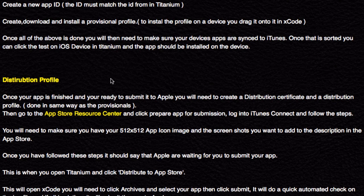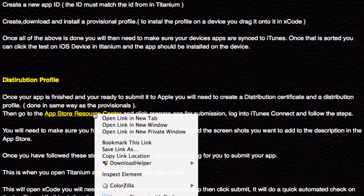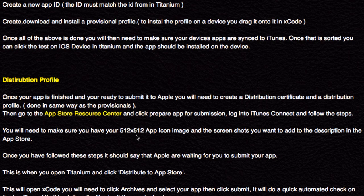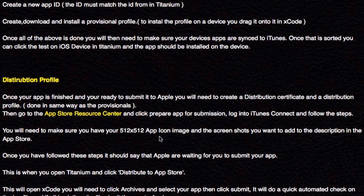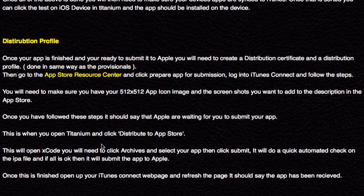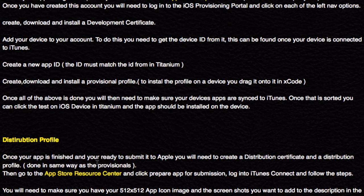The distribution profile is for when you want to submit to Apple — it's done in the same way as the provisional. You need to create a certificate and then a profile. Then you prepare the app for submission and add the icons — there's a 512x512, but I think now it might be 1024x1024 or even bigger. Once you've done that, you go into Titanium, click 'Distribute to App Store', and it will open Xcode so you can upload the IPA file. When you submit to iTunes, I think it takes about 2 weeks for them to get back with a yes or no.